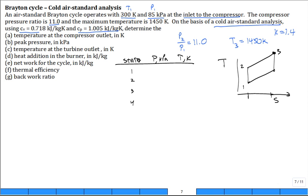Because it's a cold air analysis, any time we need a change in H, we'll just use one of those specific heats, C sub P times delta T.